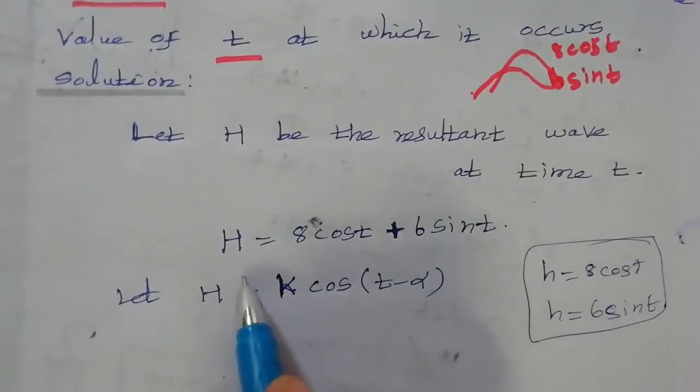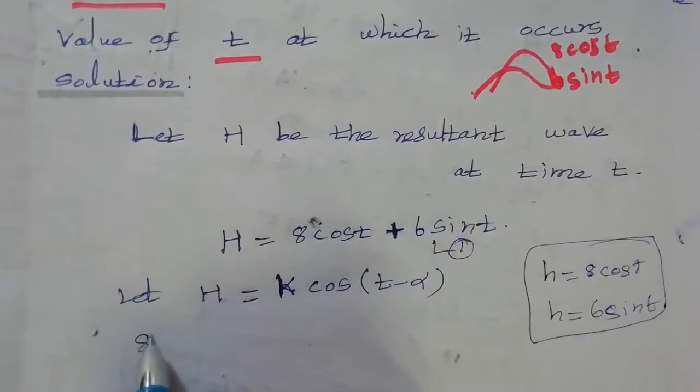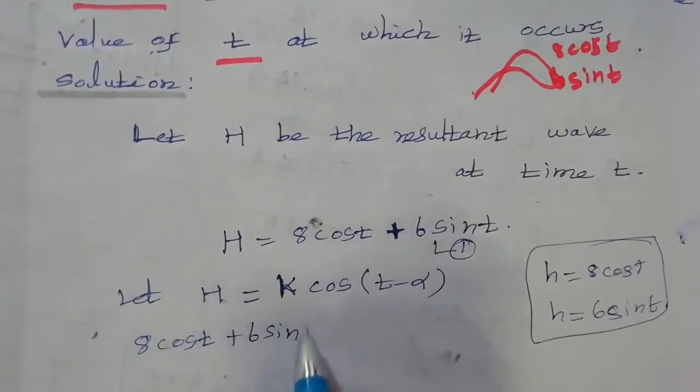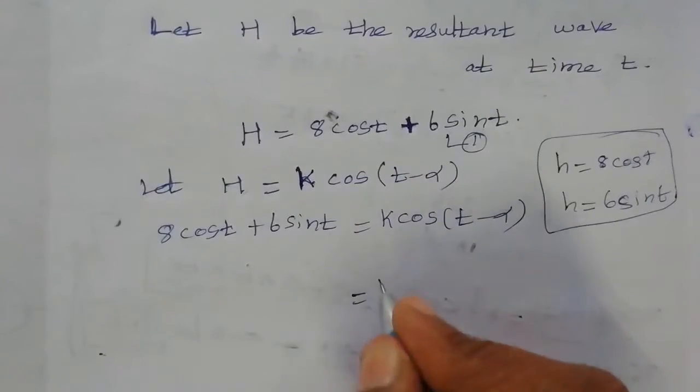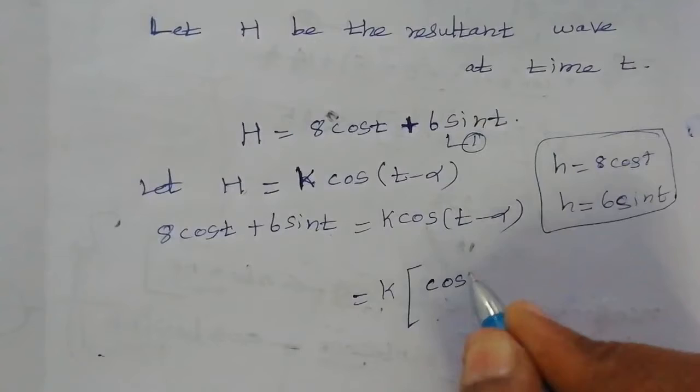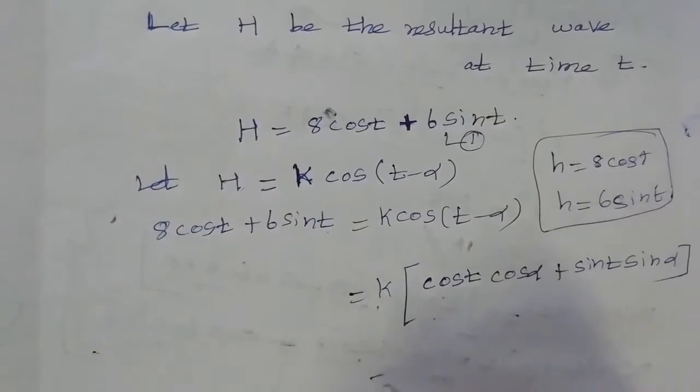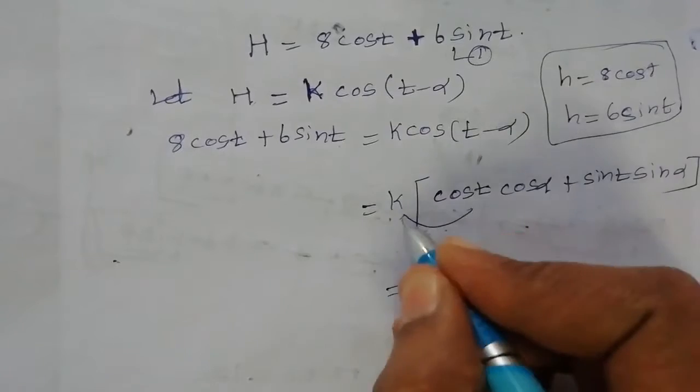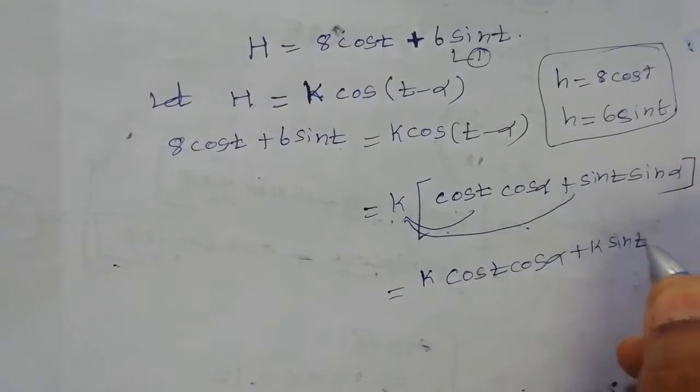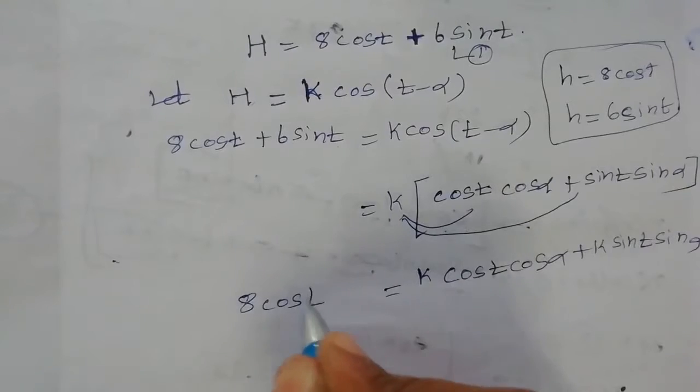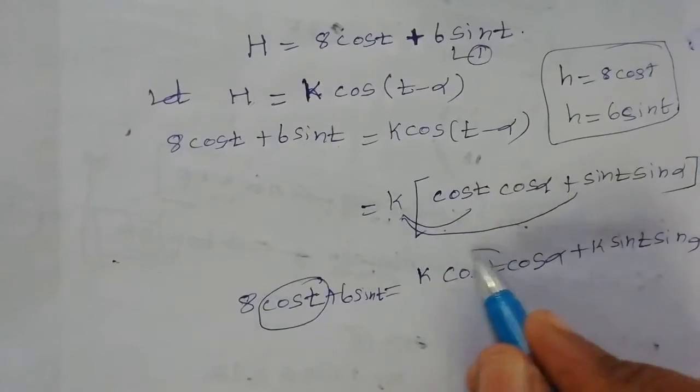We will equate two equations. So 8 cos t plus 6 sin t is equal to k cos of t minus alpha. That is equal to k into cos a minus b formula, cos a cos b plus sin a sin b. Equal to k cos t cos alpha plus k sin t sin alpha. Left side, 8 cos t plus 6 sin t.